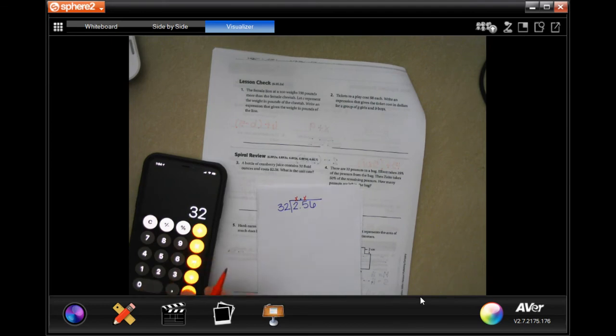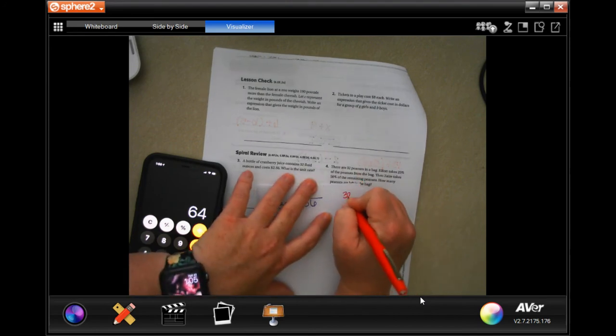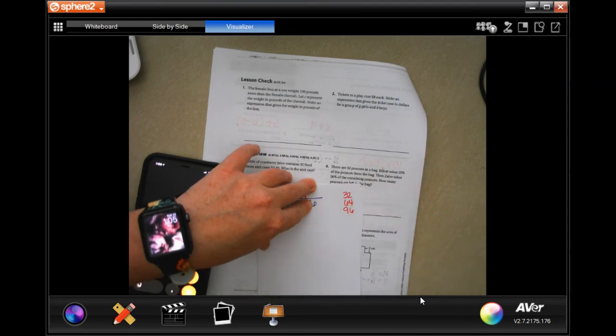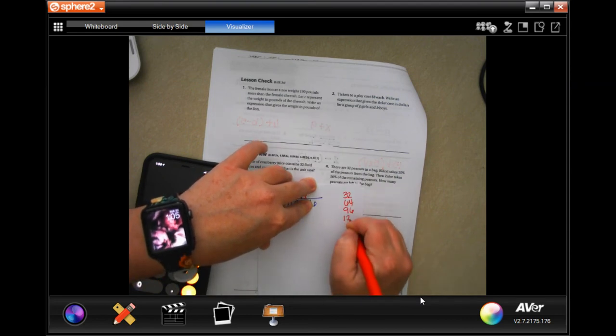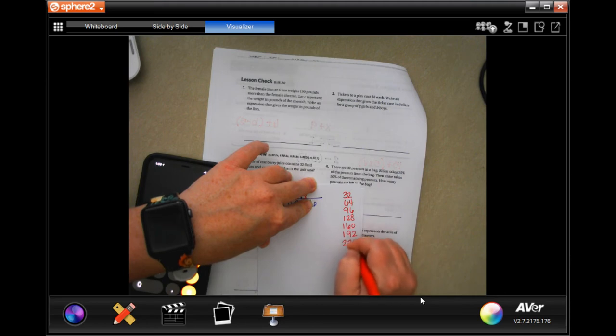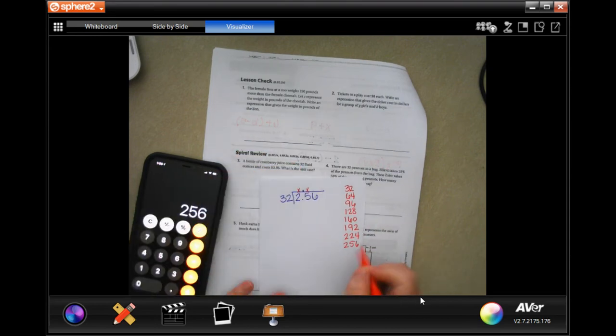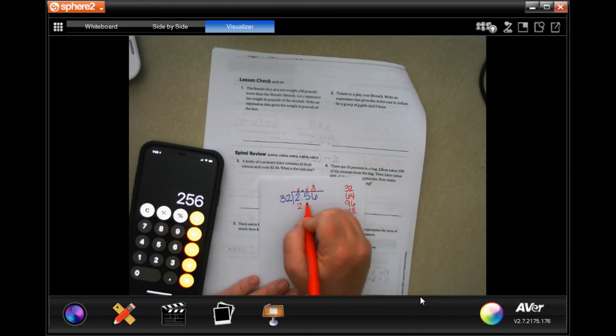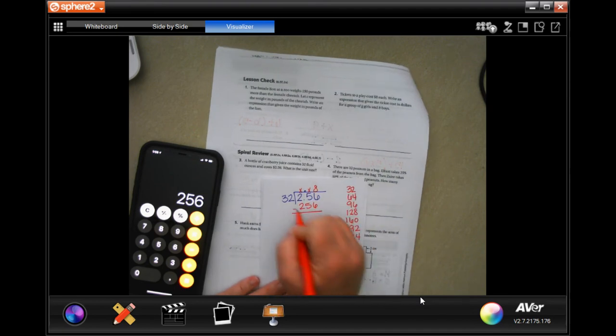So there's 32, 64, 96, 120, 160, 192, 224, and 256. So 1, 2, 3, 4, 5, 6, 7, 8 times, 8 times 32 was 256. Subtracting at 0.